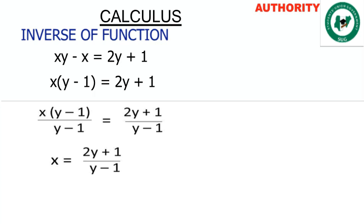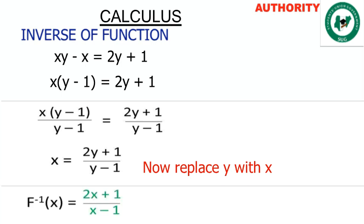We have now solved for x. The next step is to replace every y with x, and replace x with the inverse notation. So the inverse function f⁻¹(x) is equal to 2x plus 1 all over x minus 1. This is the inverse of the original function.